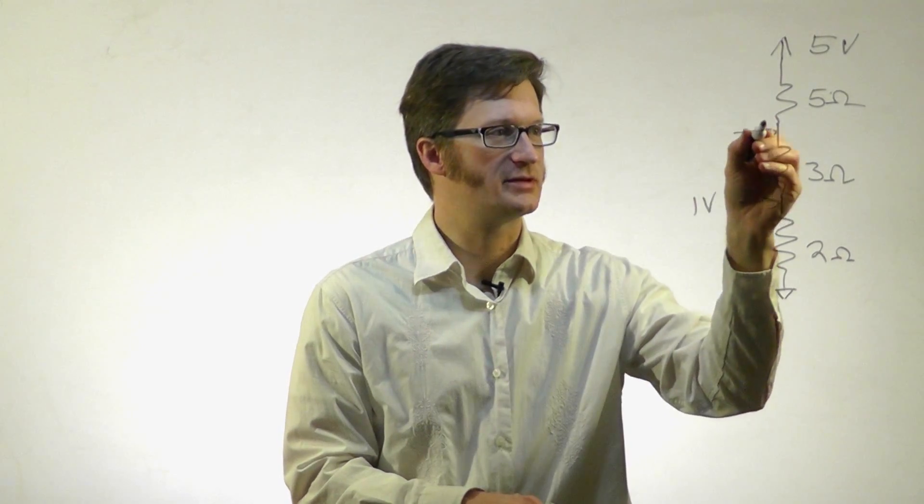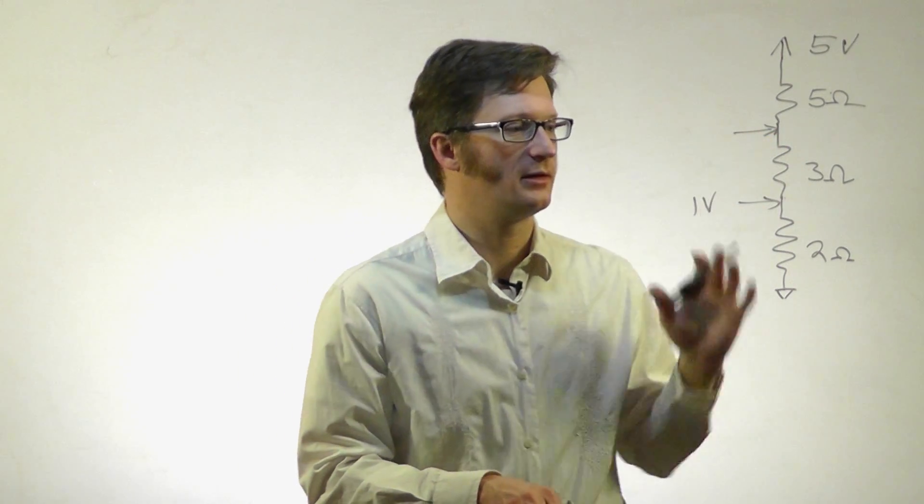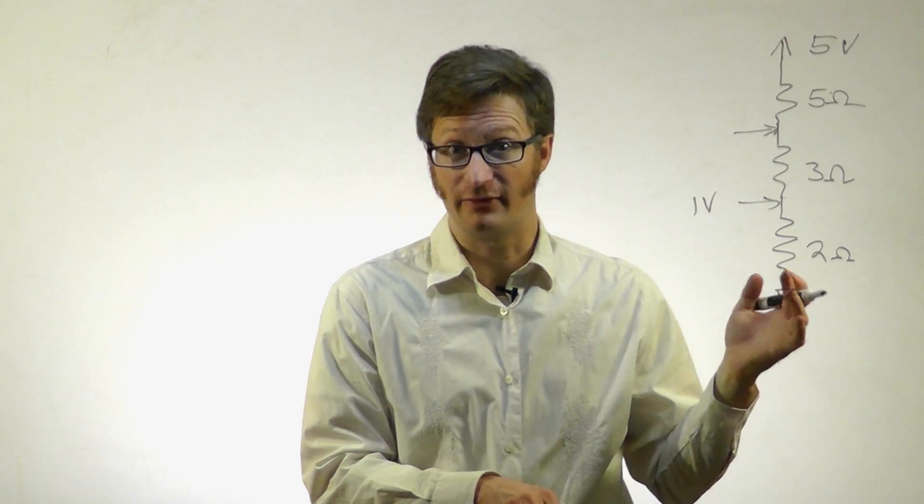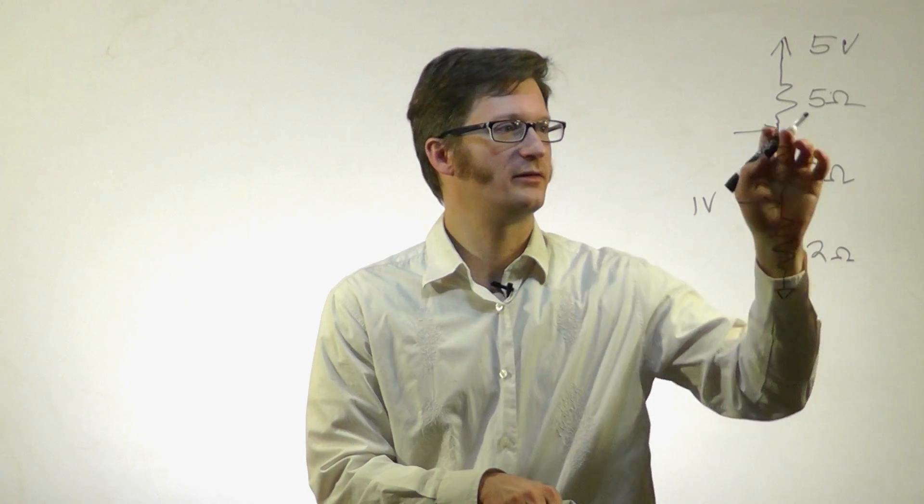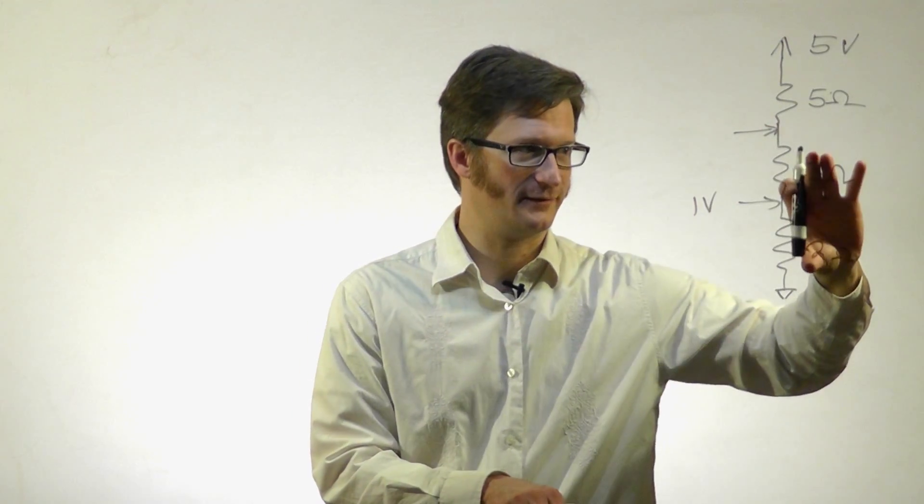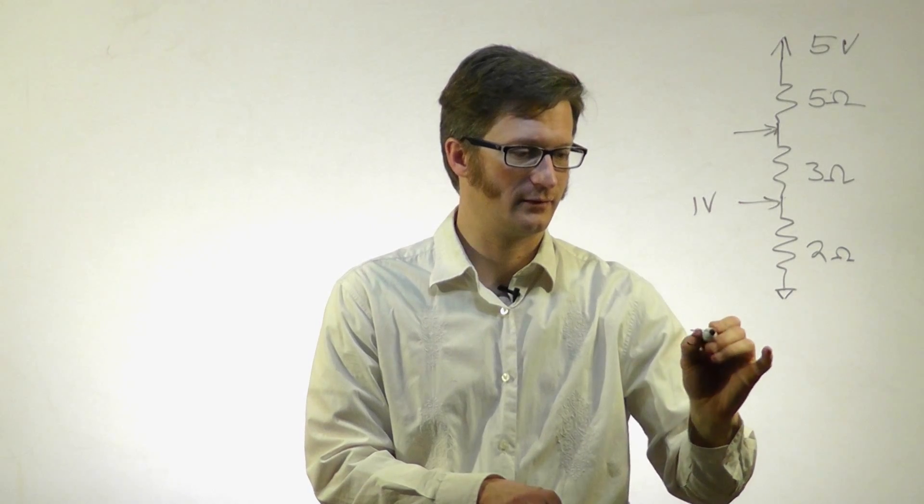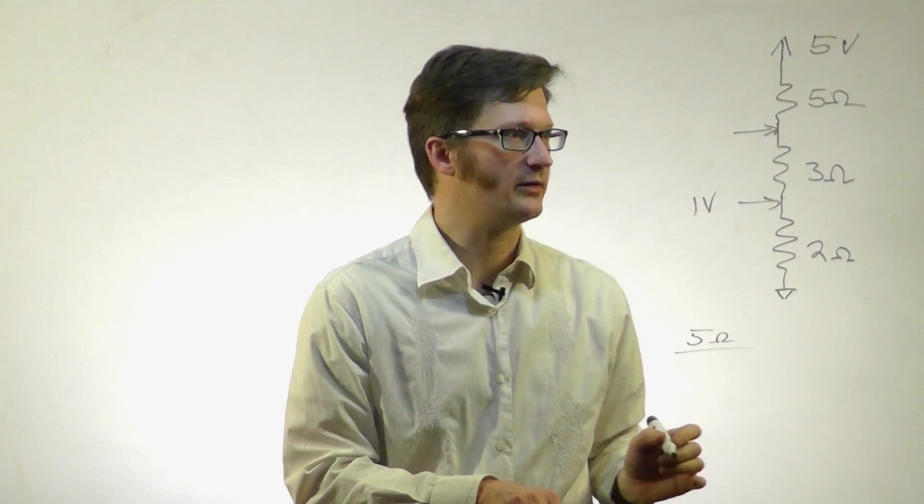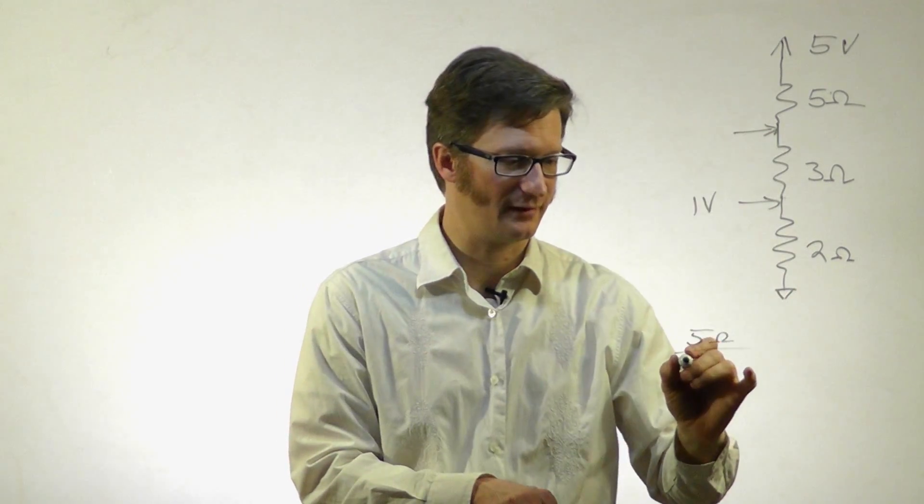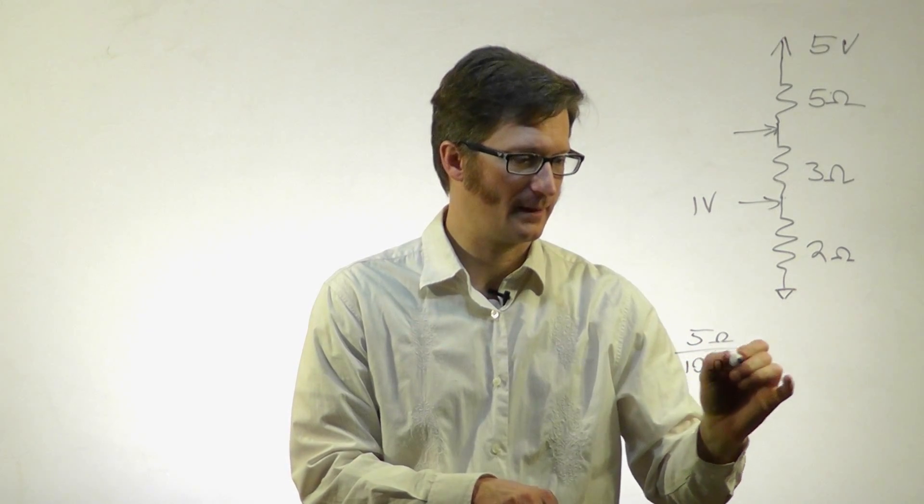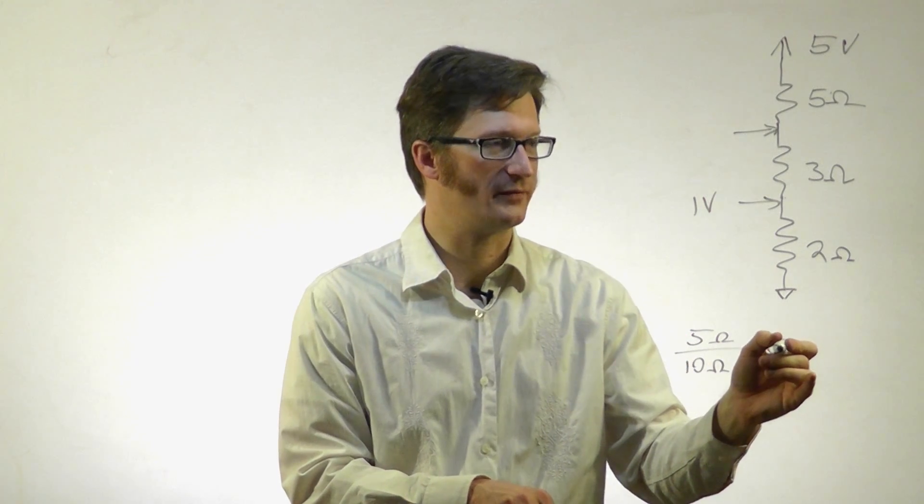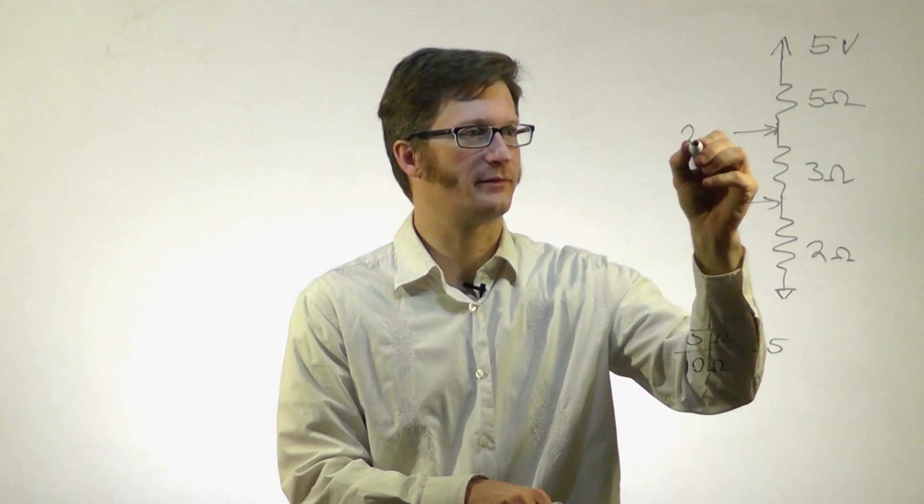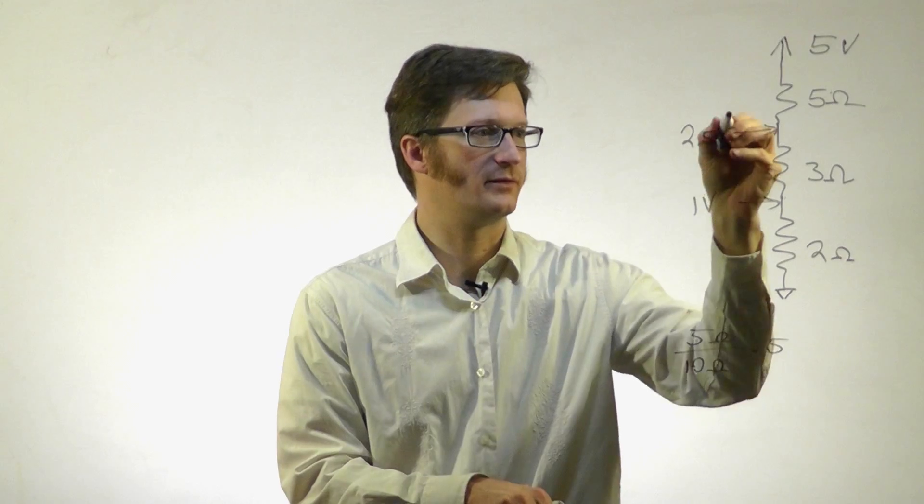For the voltage at this point right here, I do the exact same thing. I take the resistance from ground to this point, which is 5 ohms, divided by the total resistance of 10 ohms, times the voltage. This is 1/2 times 5, so that's 2.5 volts.